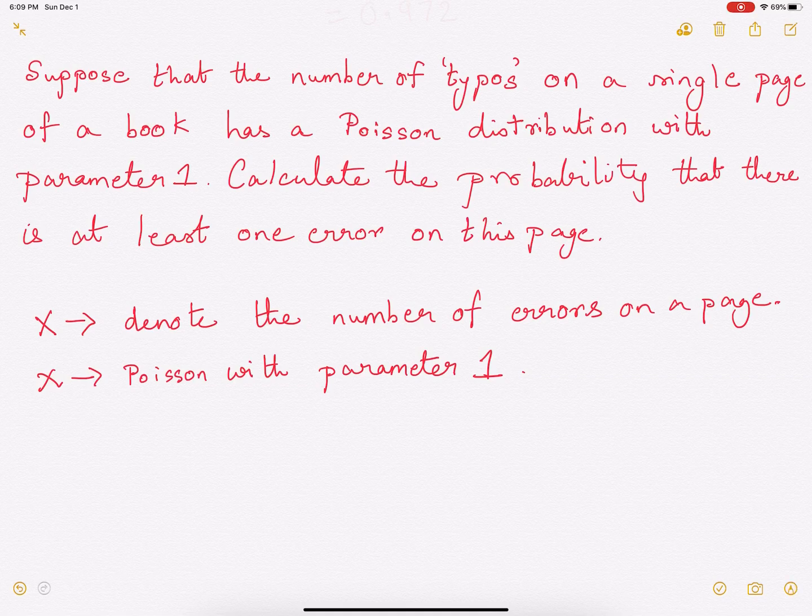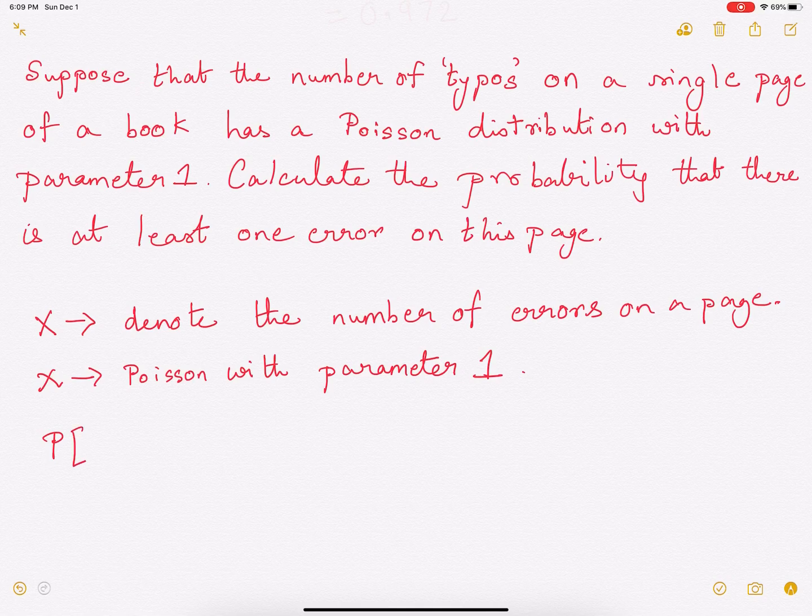Now what we need to find out is there is at least one error on this page, that is probability of X greater than or equal to 1.